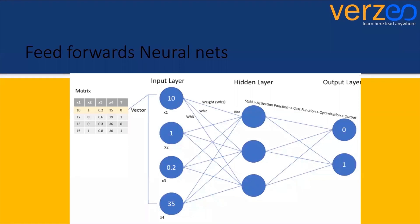Feed forward neural networks are used mainly in simple classification and regression tasks. For time series analysis or forecasting, different architectures are used. But when numerical data is present — say 10 or 15 limited features with one output to predict, whether a class or a continuous number — feed forward neural nets give fairly good results.